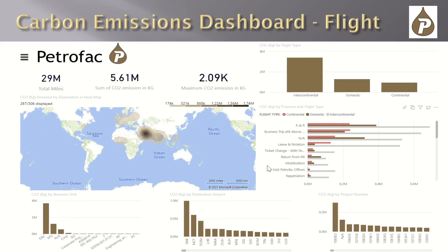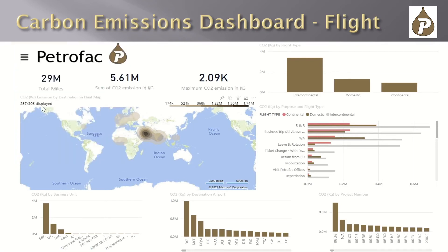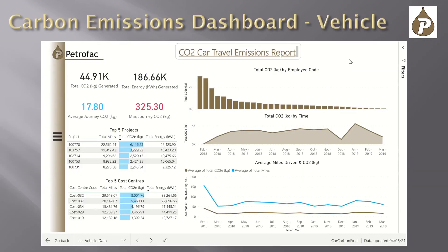This dashboard is about flight carbon dioxide emissions. We have bar charts showing CO2 emissions in kilograms by business unit, flight type, purpose of trip, and project number. Three cards show the sum of CO2 and the maximum CO2 emission of a single trip. The project manager can click the slicer panel to toggle filters, and we also included a heat map to show CO2 emissions by flight destination.